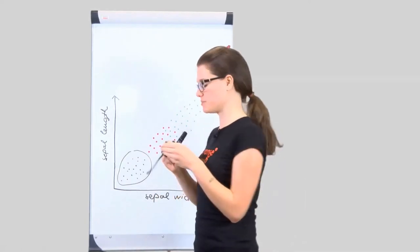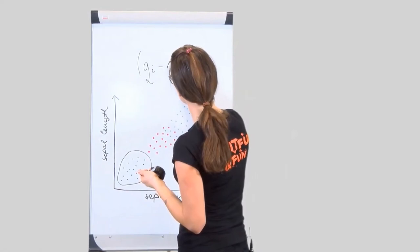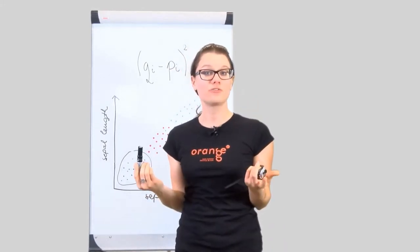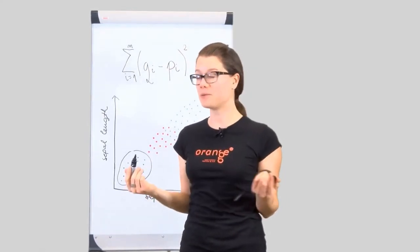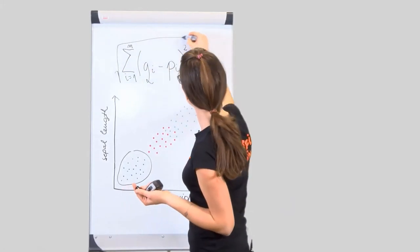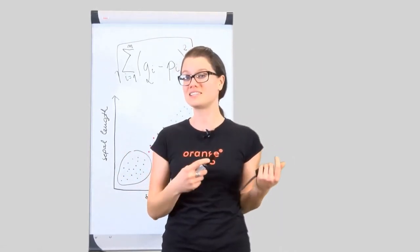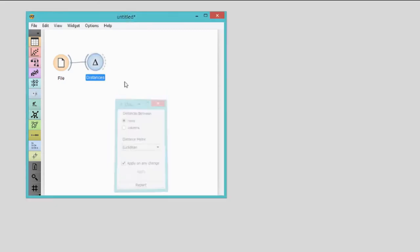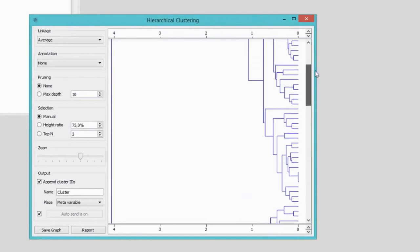For two flowers, we can check each measurement and compute the difference between them, square it to make sure it's positive, and then sum the squared differences across all four measurements. At the end, we can compute the root of the sum to match the original measurement units — I've just reinvented the Euclidean distance! The smaller the distance, the larger the similarity. Flower distances can now be used to construct hierarchical clustering. Connect the hierarchical clustering widget with the distances widget. Hierarchical clustering displays a dendrogram, which is a tree that reveals the structure of discovered clusters and the distance between them.